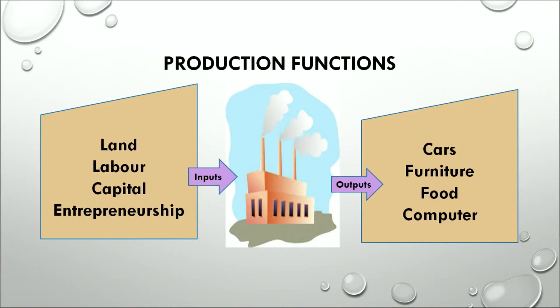We have a picture showing that when we put some inputs and process them in the factory, we get some output. The inputs include land, labor, capital, and entrepreneurship. The output totally depends on what kind of inputs we are putting into the process — we can get cars, furniture, food, computers, durable goods, or perishable goods. It all depends upon the production process along with the choice of inputs.